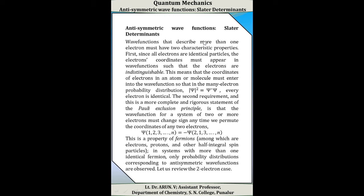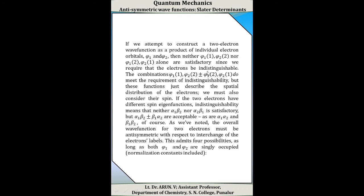The second requirement — the more rigorous statement of the Pauli exclusion principle — is that the wave function of a system of two or more electrons must change sign any time we permute the coordinates of any two electrons. For example, if we interchange the coordinates of electrons 1 and 2 in an n-electron system psi(1, 2, 3, ..., n), we get the antisymmetric result: psi(1, 2, 3, ..., n) = −psi(2, 1, 3, ..., n). This is the property of fermions, and only the probability distribution corresponding to the antisymmetric wave function is observed.